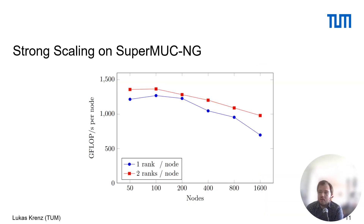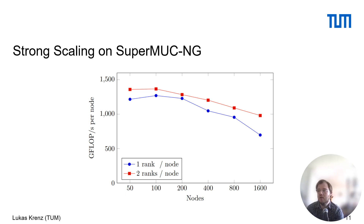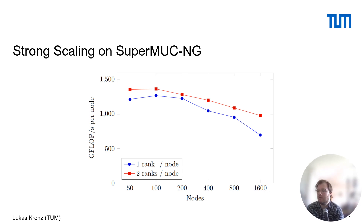The last slide for this model is about the strong scaling on SuperMUC-NG. The x-axis shows the number of nodes and the y-axis shows gigaflops per node, which is basically parallel efficiency. We can see that we scale the mesh with 18 million elements relatively well between 50 and 1,600 nodes. The larger mesh scales even better. We are also good at weak scaling, and when running on 1,000 nodes we get quite good performance.